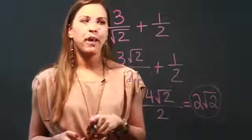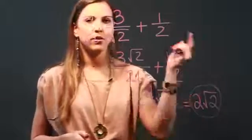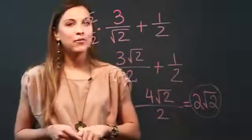So 3 over radical 2 plus 1 half is equal to 2 radical 2. And that is how you add fractions with roots.